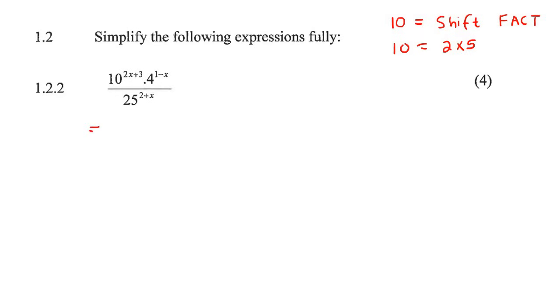So what we'll do is we'll change the 10 to 2 times 5, and then that will be to the power of 2x plus 3, and then the 4 will be 2 to the power of 2, and then you put a bracket, 1 minus x, and then 25 will be 5 to the power of 2, and then 2 plus x.